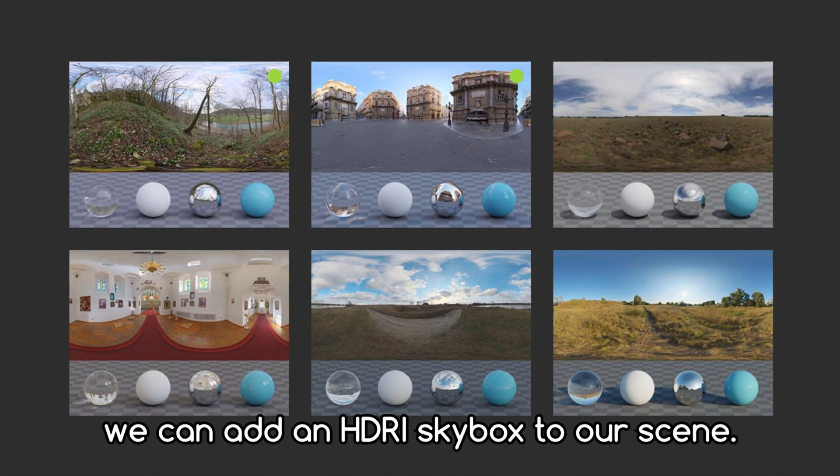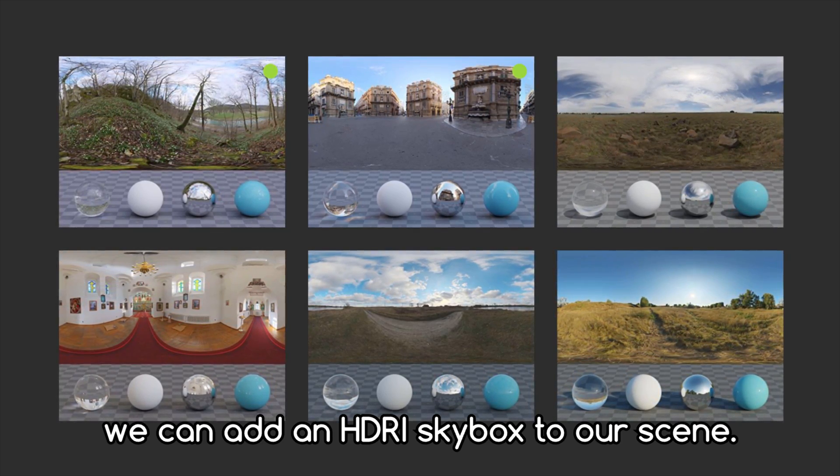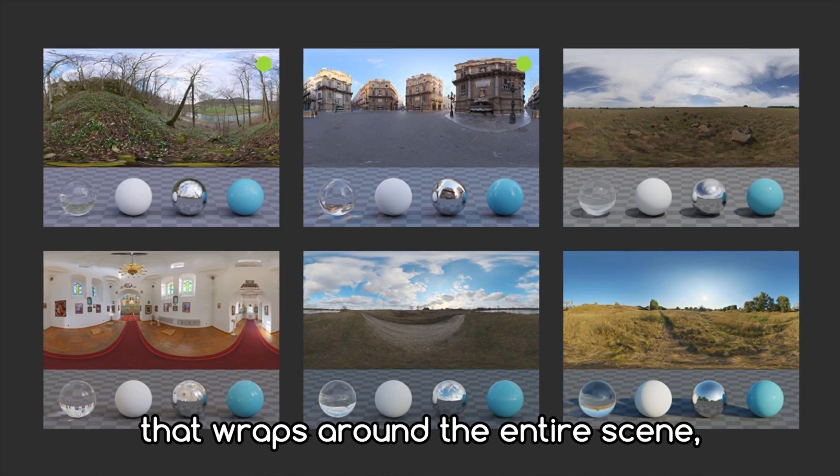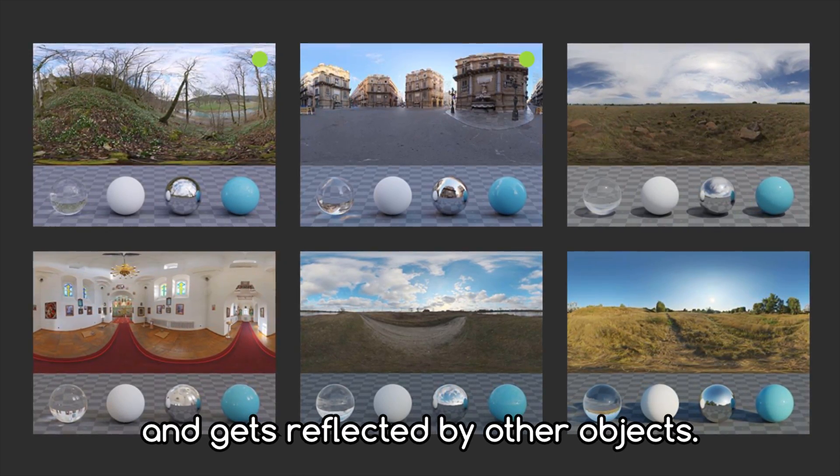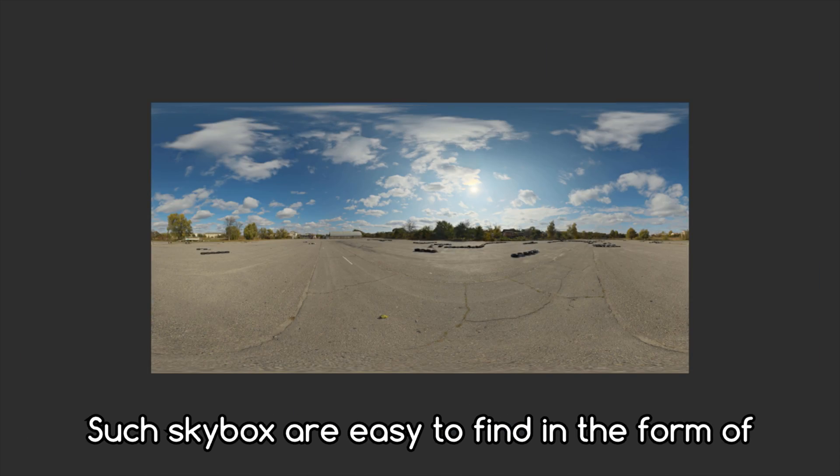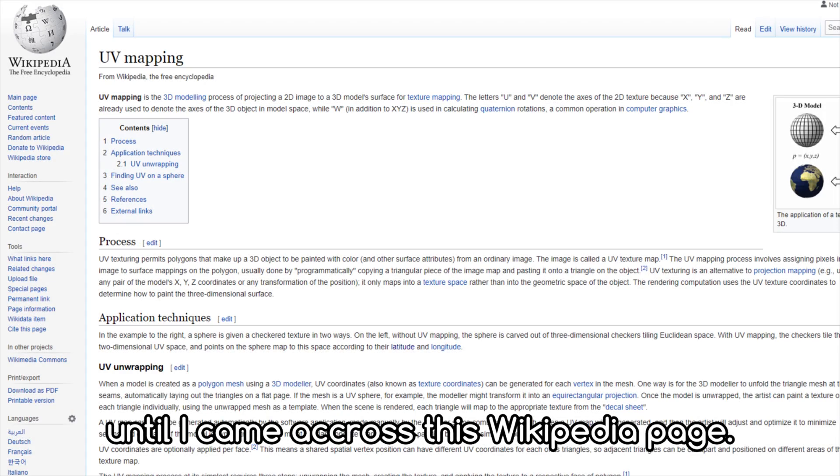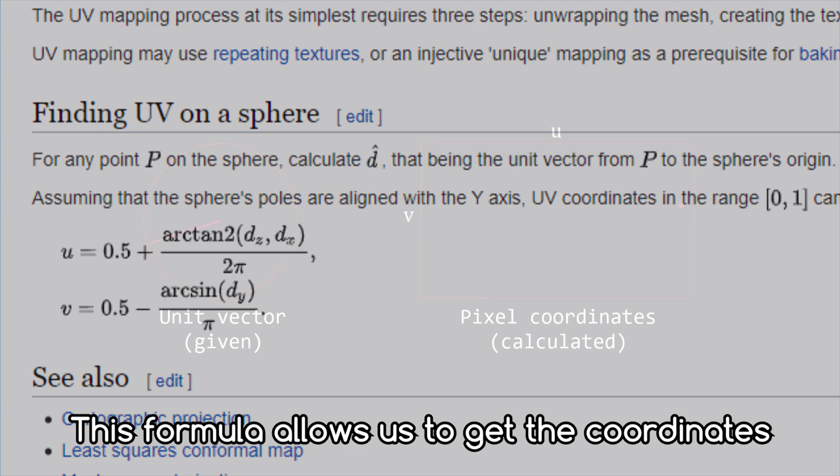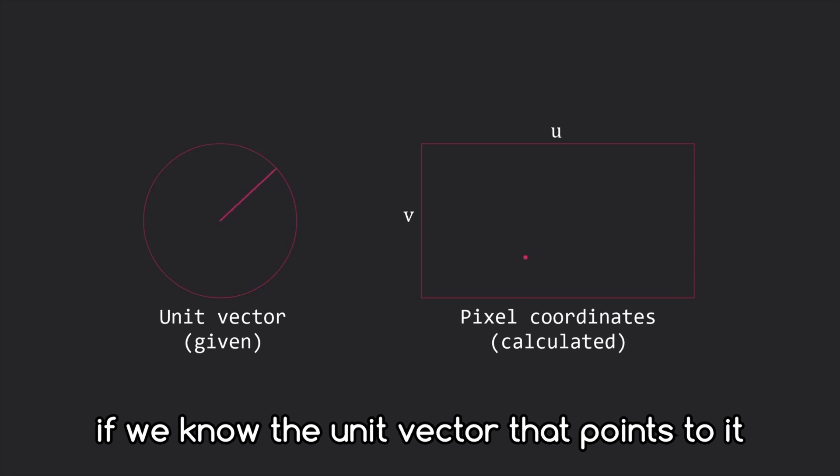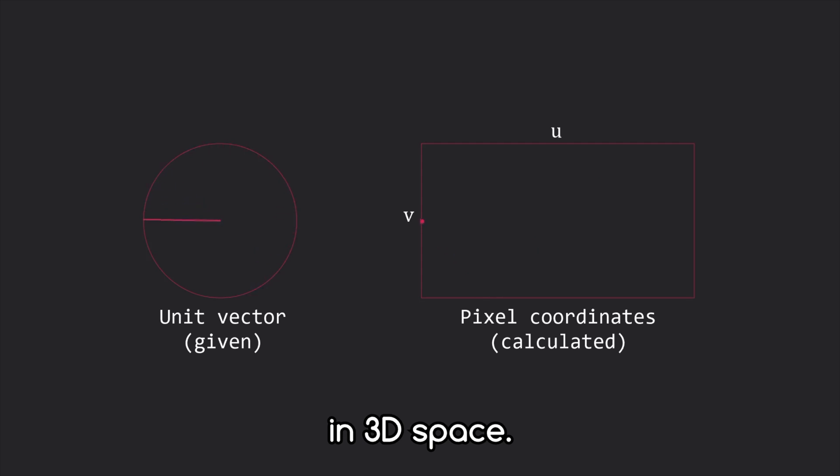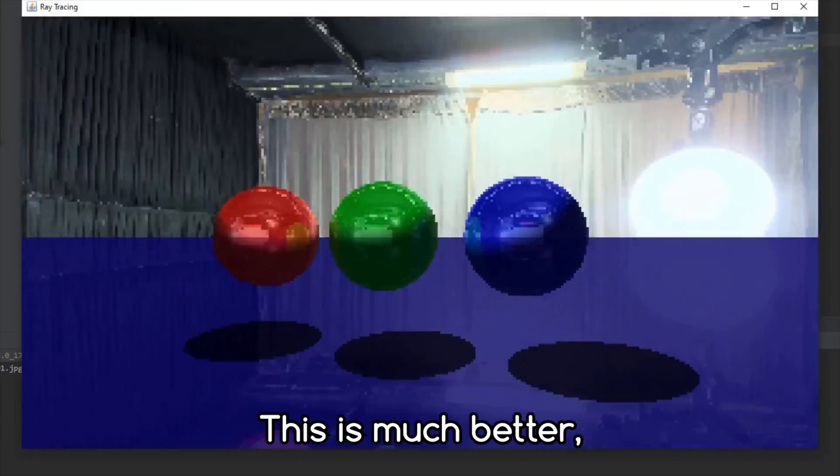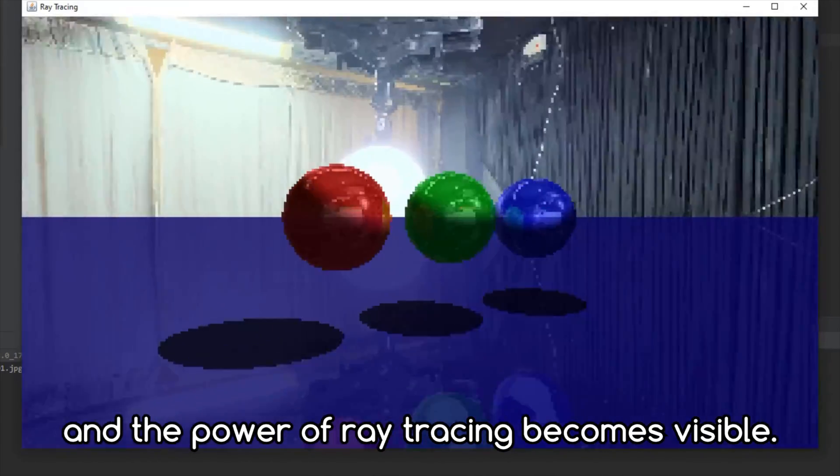To fix that, we can add an HDRI skybox to our scene. The skybox is a spherical image that wraps around the entire scene and gets reflected by other objects. Such skyboxes are easy to find in the form of equirectangular images, but I struggled to find a way to render them properly until I came across this Wikipedia page. This formula allows us to get the coordinates of any pixel on the spherical image if we know the unit vector that points to it in 3D space. With a skybox, our scene looks like this. This is much better and the power of ray tracing becomes visible.